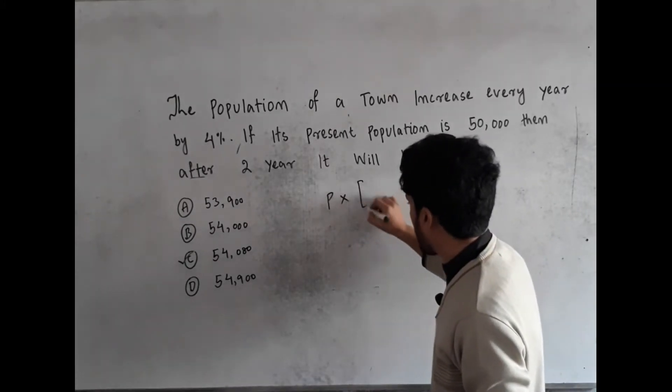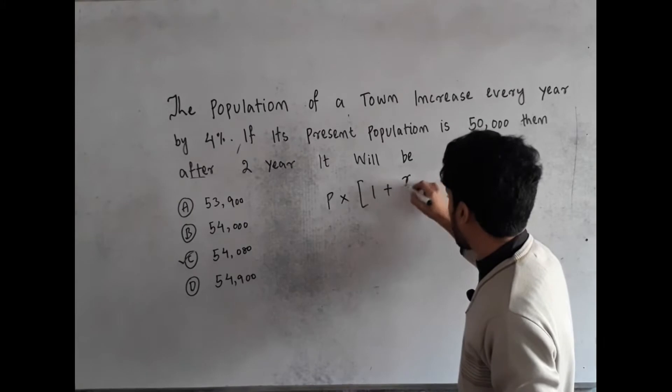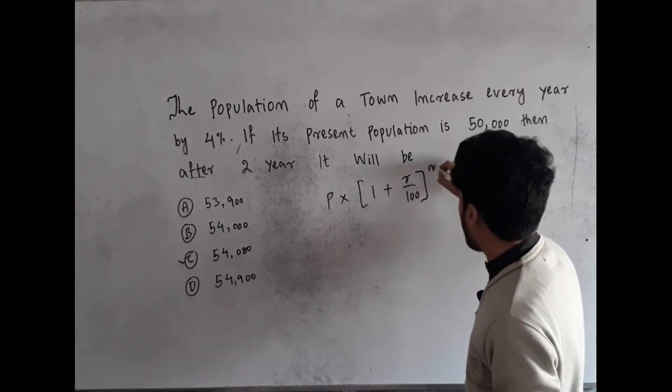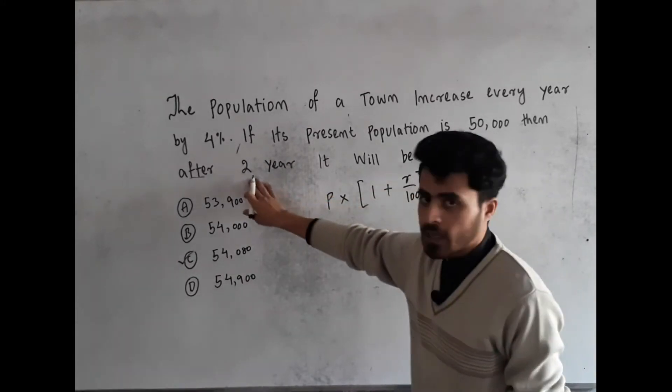The formula is P multiplied by 1 plus R divided by 100, whole to the power N. N is 2 years in this case.